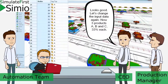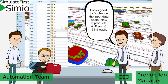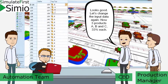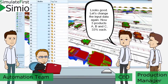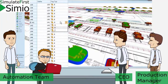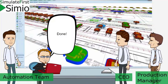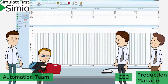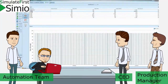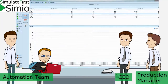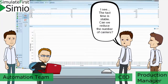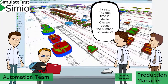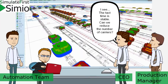Let's change the input data again — now three products B and C, 33% each. Done. I see the takt time is stable. Can we reduce the number of carriers?